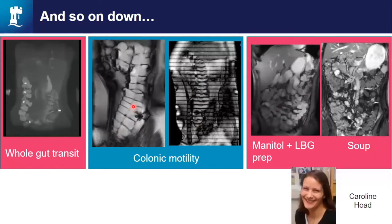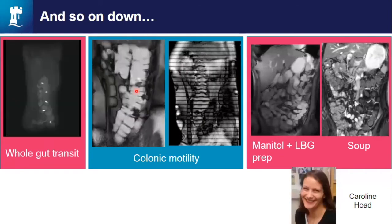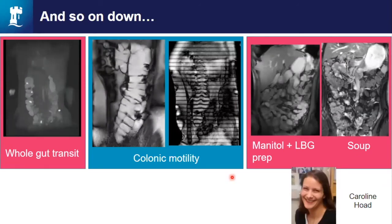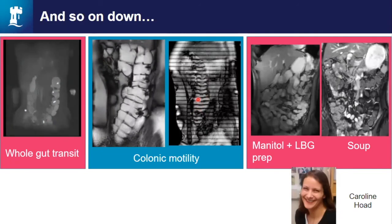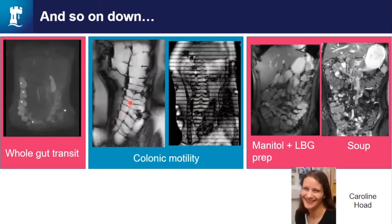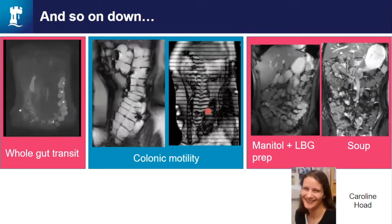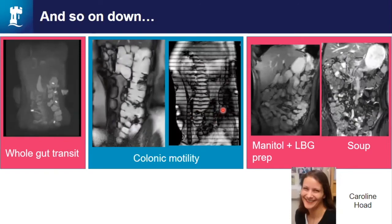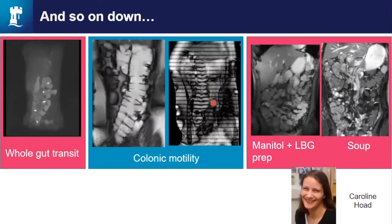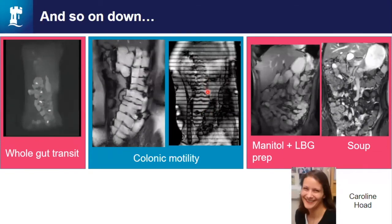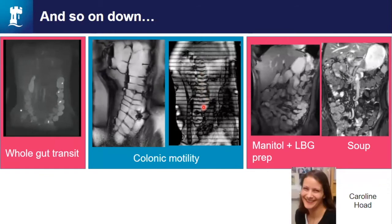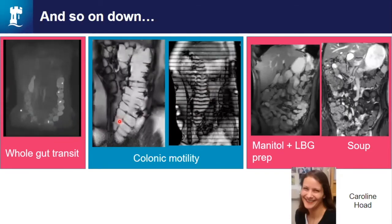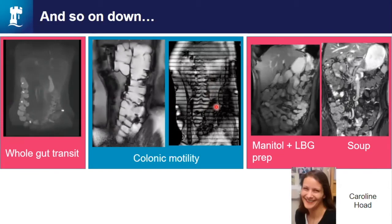I want to stop at this image of the haustra — the little lines in the colon. Looking at colon contents moving, they seem to move up and down in the middle but not at the edges, which are held stationary by the haustra. This is almost certainly related to the microbiome, which makes quite a significant fraction of your body's material and has a big impact on satiety. It looks like the haustra are there to stop the microbiome being disturbed during its formation.